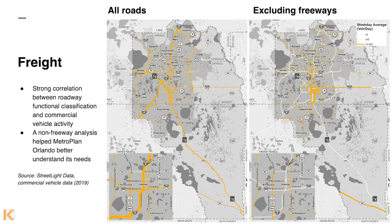Switching to questions we did answer with Streetlight data: for freight and goods movement, we looked at the commercial vehicle data set that Streetlight can provide. We did a zone activity analysis looking at all the roadways in the Metroplan Orlando region, with line thickness showing the level of commercial vehicle activity. The map on the left uses all roads in the network, and as you might imagine it shows that the highest proportion of freight movement is happening on limited-access facilities — freeways, expressways, the turnpike — which we kind of knew, but it helps to confirm it with data.